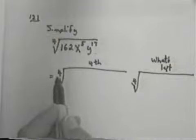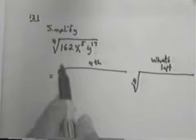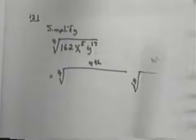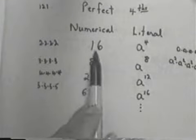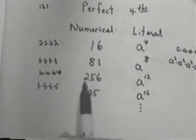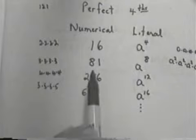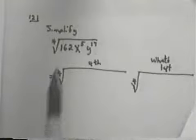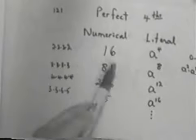Be very careful that you get your index in. Now, is 162 a 4th? Well, notice it goes 16, 81, 256, and so forth. So, 162 is not a 4th.